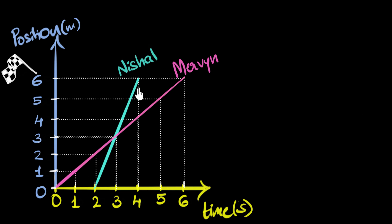A position time graph of what happened. So let's look at this graph and see if we can figure out what happened at the race, who won the race, and who was faster.